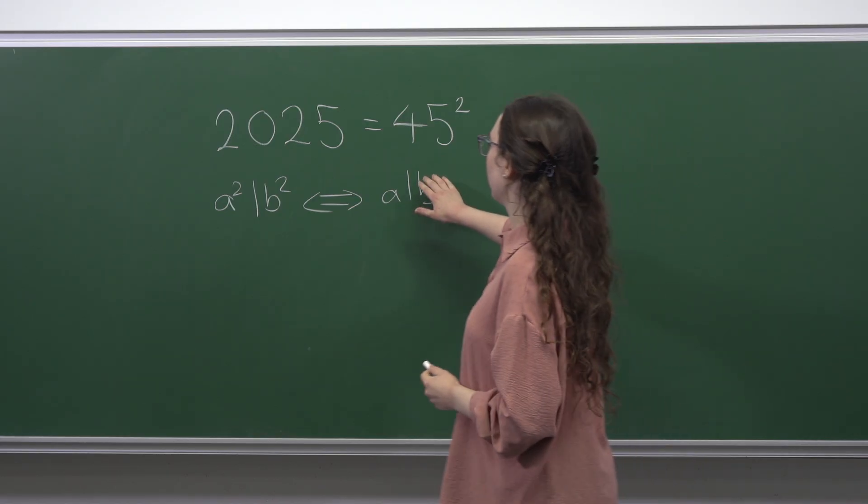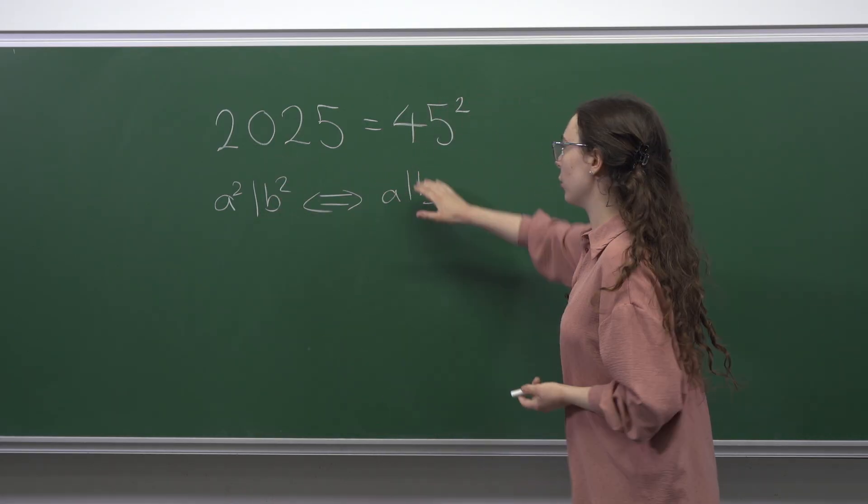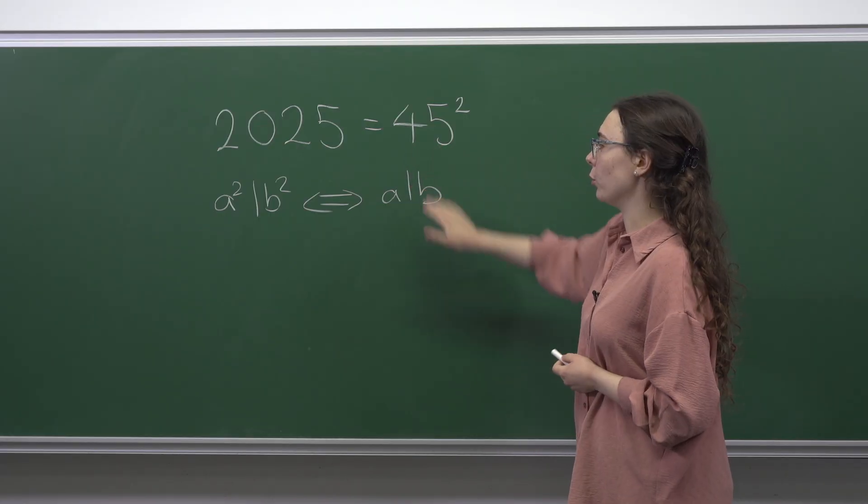So this means that the number of squares which divide 2025 is equal to the number of factors of the number 45.